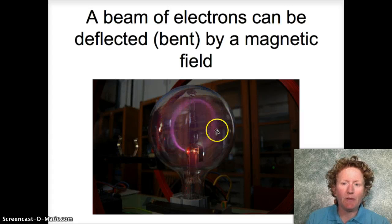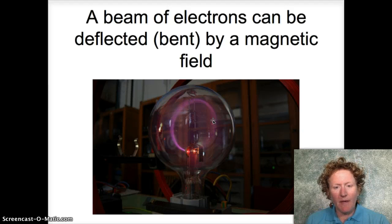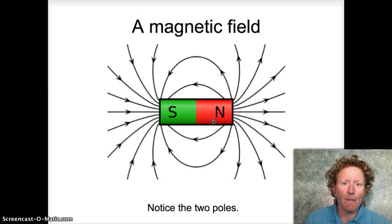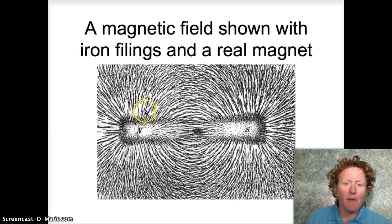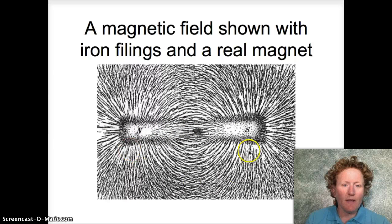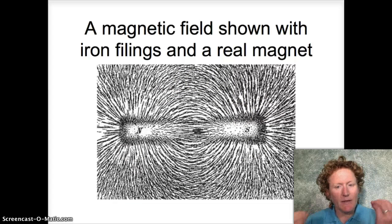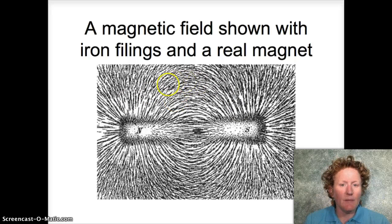This is a beam of electrons deflected by a magnetic field, so magnets can control electric current. Magnets have two poles — a north pole and a south pole. You're going to need that later. Here is a real magnet underneath a piece of paper with iron filings showing the electromagnetic field. The magnet causes those iron filings to become like little magnets and line up in the direction of the electromagnetic field.